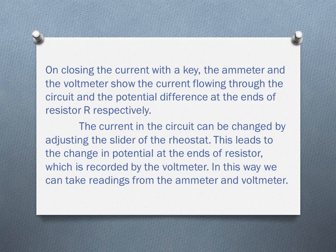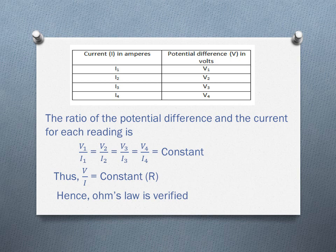On closing the current with a key, the ammeter and the voltmeter show the current flowing through the circuit and the potential difference at the ends of resistor R respectively. The current in the circuit can be changed by adjusting the slider of the rheostat. This leads to the change in potential at the ends of the resistor, which is recorded by the voltmeter. In this way, we can take readings from the ammeter and voltmeter as shown in this table. The current I is measured in amperes and the potential difference is measured in volts. The ratio of the potential difference and the current for each reading is given by V1 by I1 equals V2 by I2 equals V3 by I3 equals V4 by I4 which equals constant. Thus, V by I equals constant which is denoted by R, hence Ohm's law is verified.